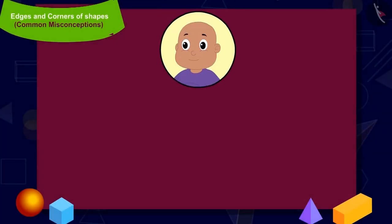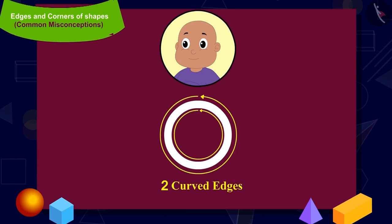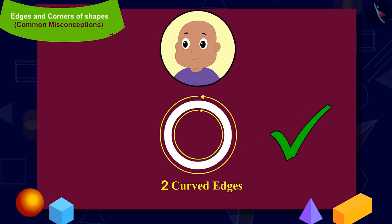Let us have a look at Bablu's shape. Can you look out for the edges in Bablu's shape? These are the two curved edges in Bablu's shape. Can you look for the corners in this shape? In Bablu's shape, the curved edges can never meet. That is why Bablu's shape has no corners. So is Bablu's shape correct? Yes, Bablu's shape is absolutely correct.